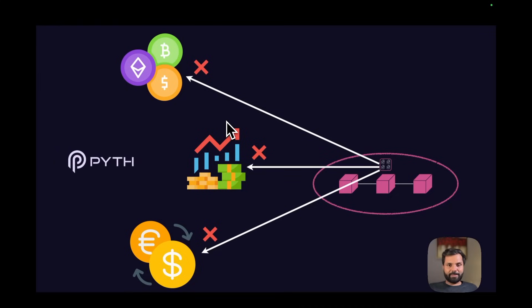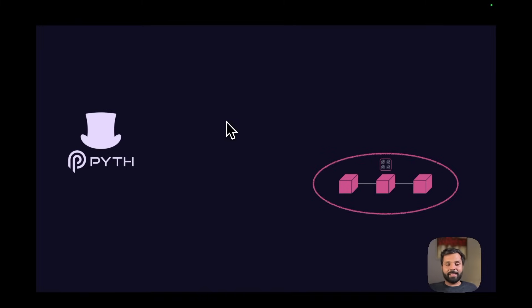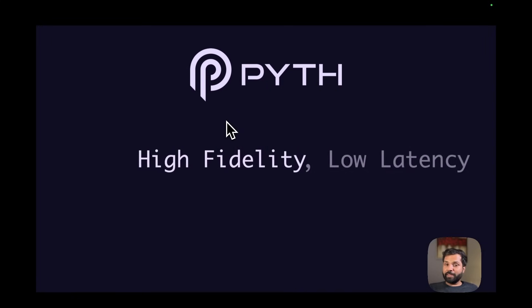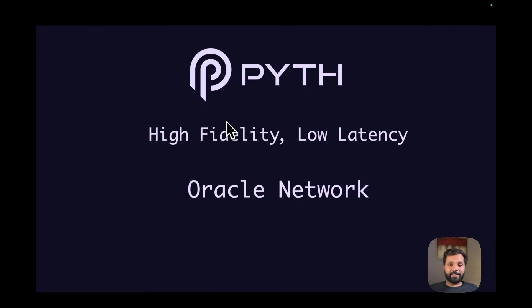That is where Pyth comes in. Think of Pyth as a magic messenger who collects data from various off-chain sources and makes it available within the blockchain ecosystem, where apps or decentralized applications can use that off-chain data of various financial assets within smart contracts. So Pyth is a high-fidelity, low-latency oracle network which makes off-chain financial markets data — related to various assets like crypto, stocks, forex, etc. — available on-chain.